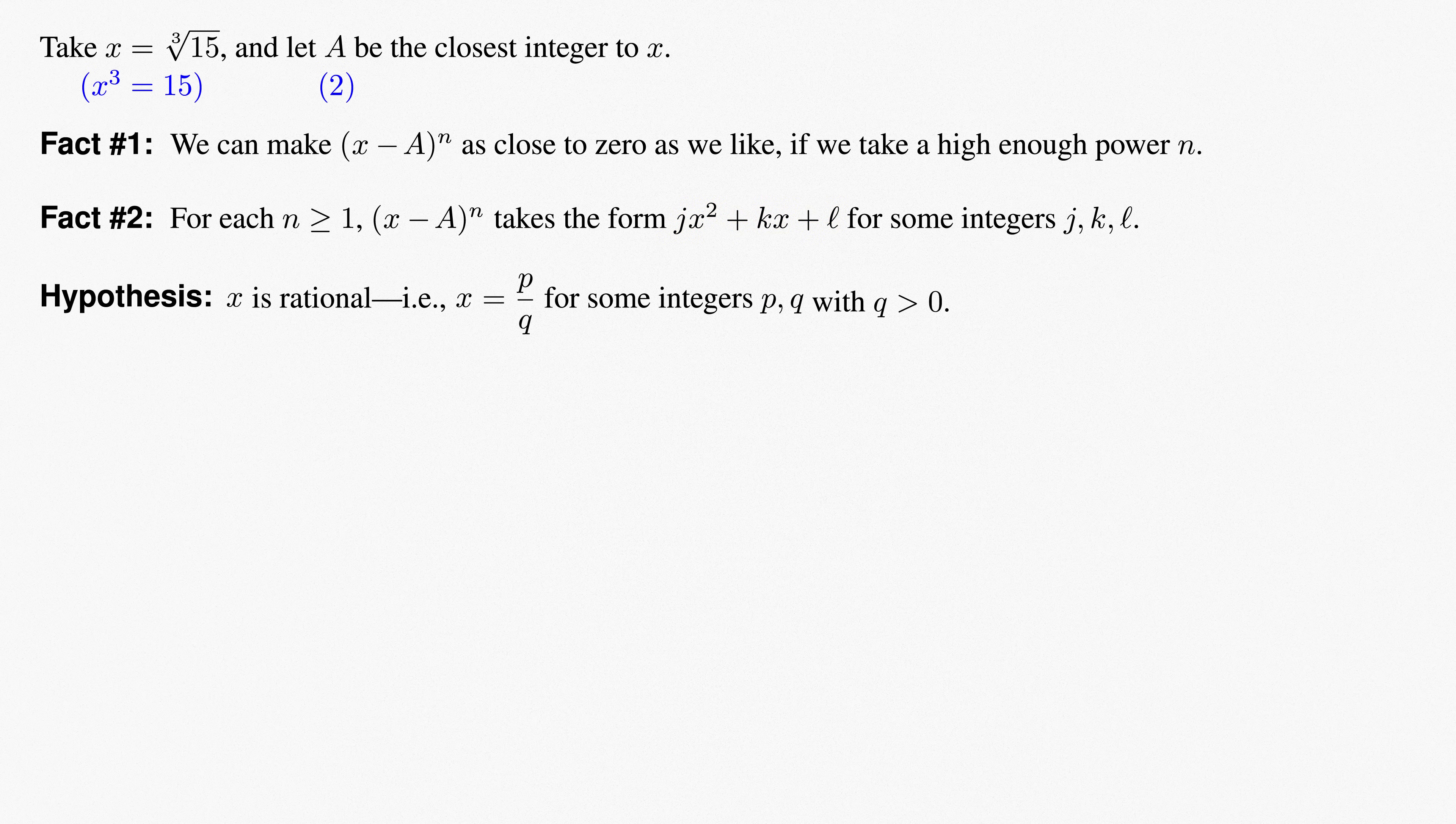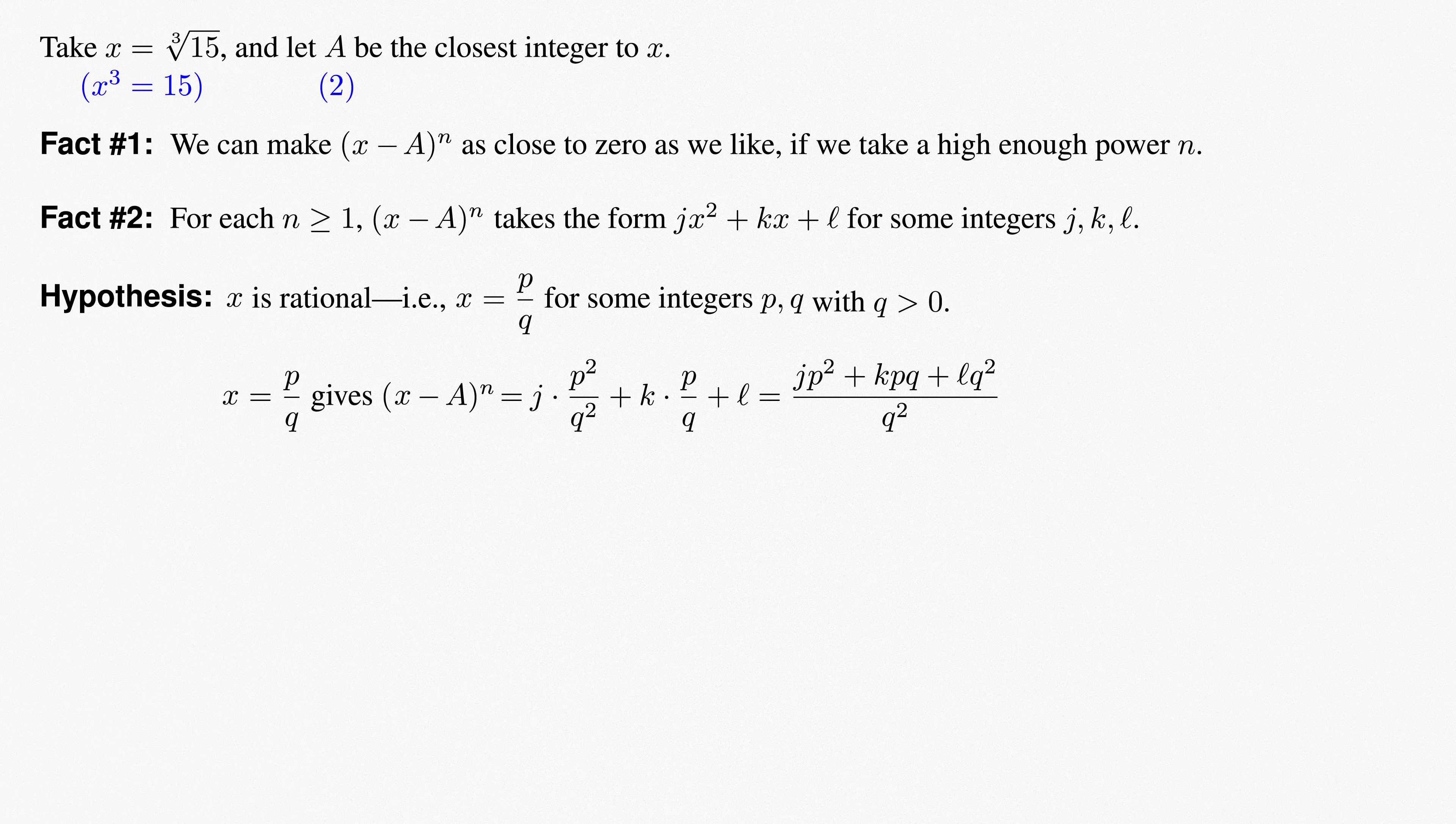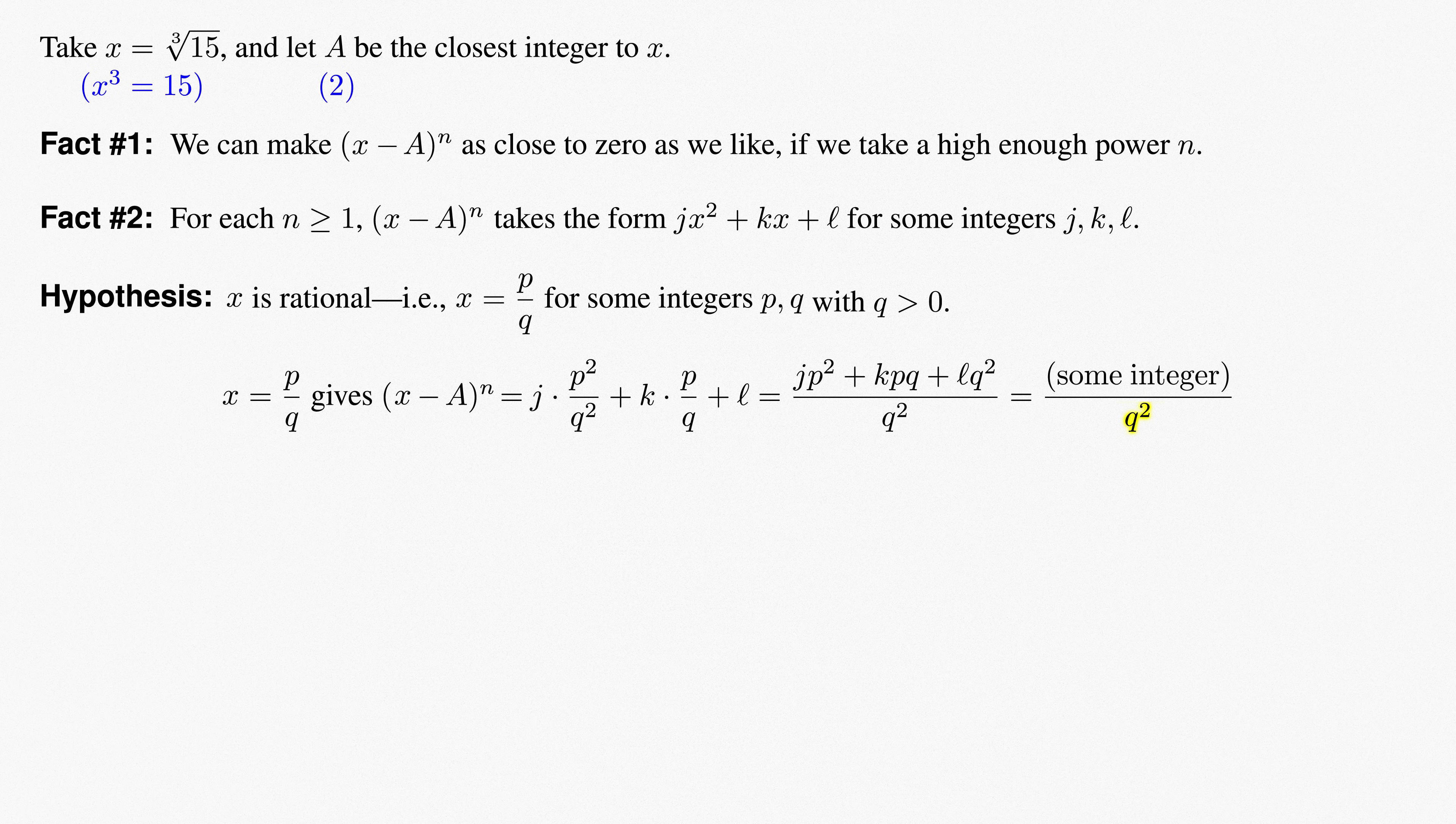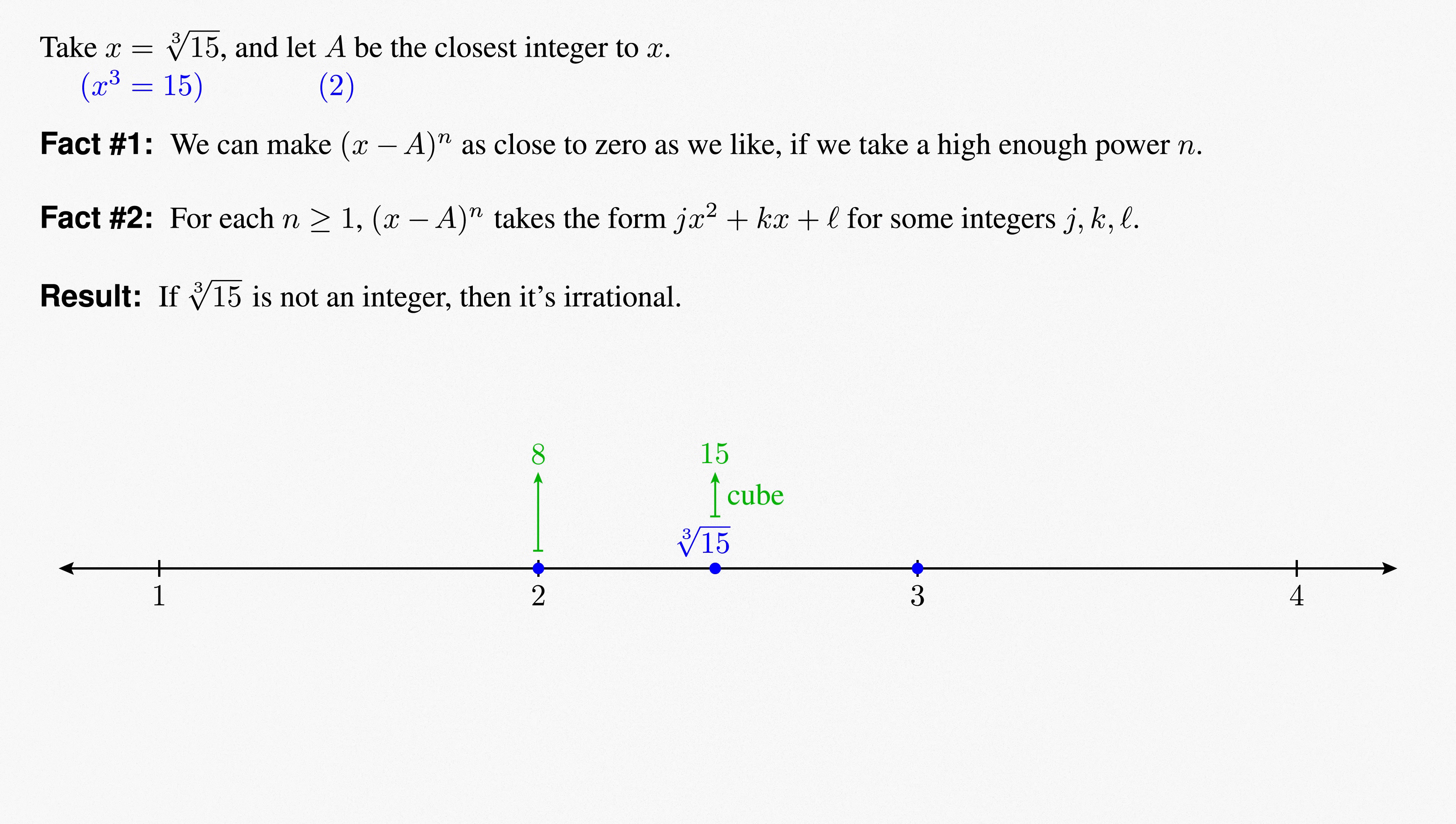If x equals p over q, this gives x minus a to the n equals j times p squared over q squared, plus k times p over q plus l, or jp squared plus kpq plus lq squared over q squared, which is just some integer over q squared. Again, a fraction with a fixed denominator. The proof goes exactly as before. And we can show that the cube root of 15 is irrational because it's not an integer. 2 cubed is 8, which is less than 15, and 3 cubed is 27, which is greater than 15. Just check the nearest integers. Other integer roots work similarly.